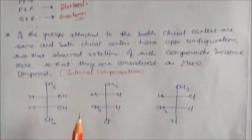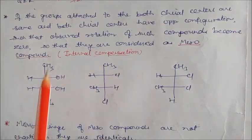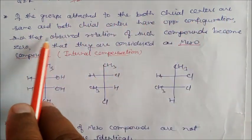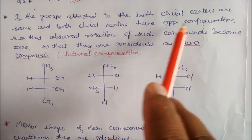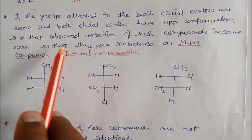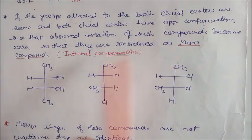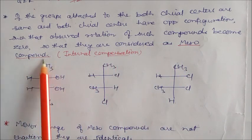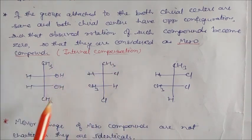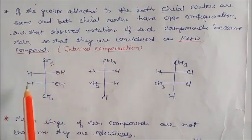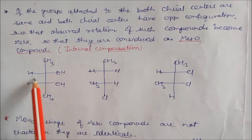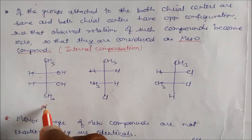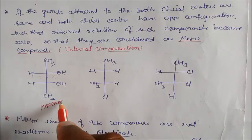Now, if the groups attached to both the chiral centers are the same, and both chiral centers have opposite configurations such that the observed rotations become zero — they are considered meso compounds. That is called internal compensation. See here: this is CH3, HOH and HOH and CH3. If you draw a plane mirror here, this becomes a plane of symmetry — so this compound is a meso compound. Here internal compensation is there, so this compound as a whole molecule is optically inactive.